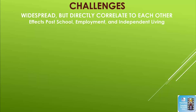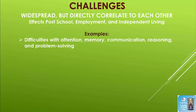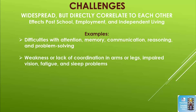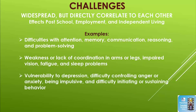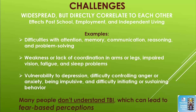Some examples of challenges for students with traumatic brain injury include difficulties with attention, memory, communication, reasoning, and problem solving. They might have weakness or lack of coordination in arms or legs, impaired vision, fatigue, and sleep problems. They could be vulnerable to depression, have difficulty controlling anger or anxiety, be impulsive, and have difficulty initiating or sustaining behavior. Many people, including employers, don't understand traumatic brain injury, which can lead to fear-based perceptions.